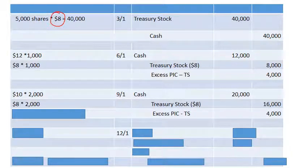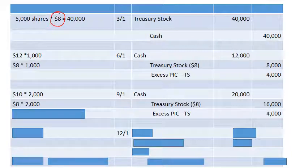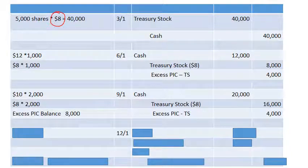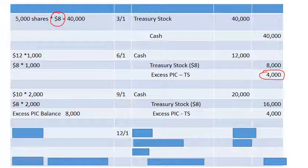The rule is: if you sell treasury stock for less than you paid for it, you reduce the excess paid-in capital for treasury stock until it goes to zero, and then if you need more, you reduce retained earnings. The cumulative excess paid-in capital balance is now $8,000 — $4,000 from June 1st and $4,000 from September 1st.